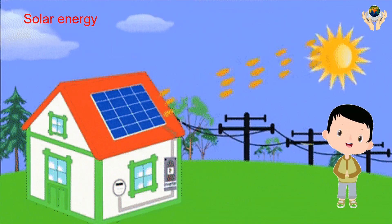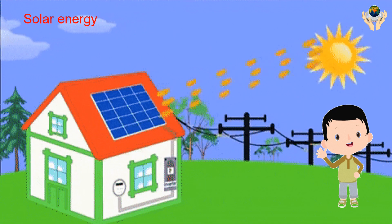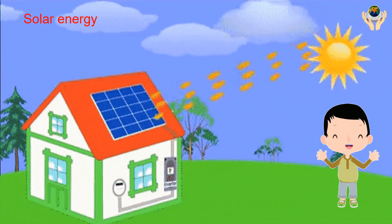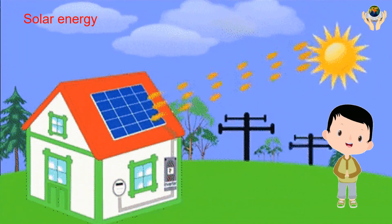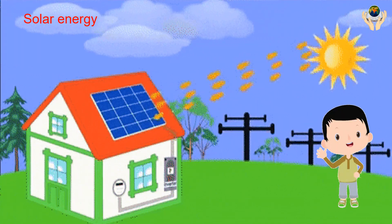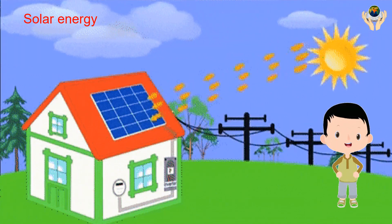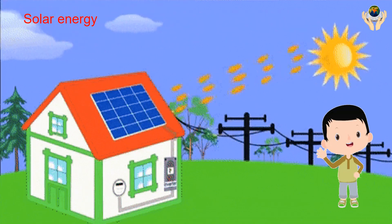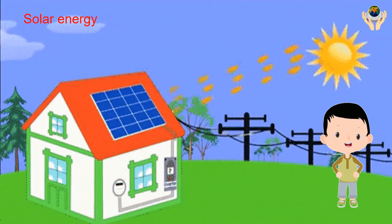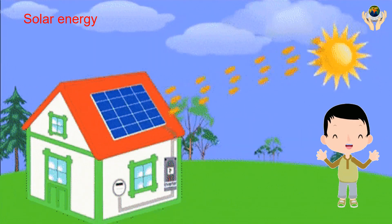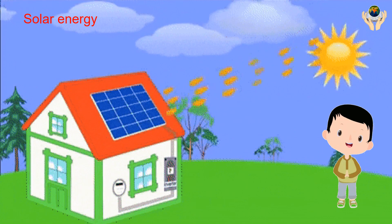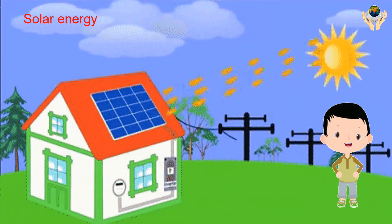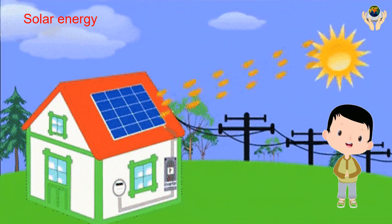What is solar energy? Solar energy is simply the light and heat that come from the sun. Photovoltaic cells convert sunlight into electricity, which we can use for our home appliances.